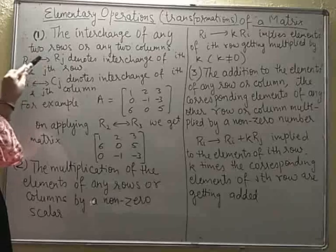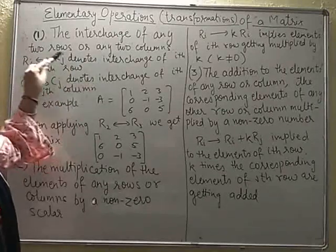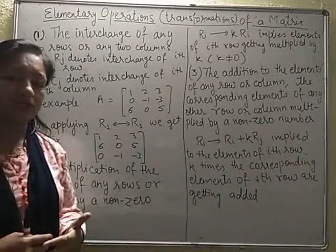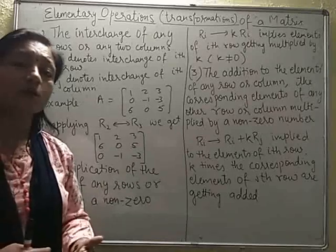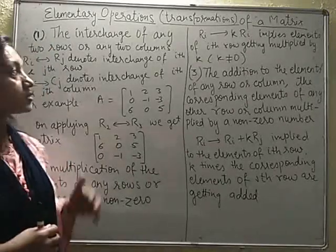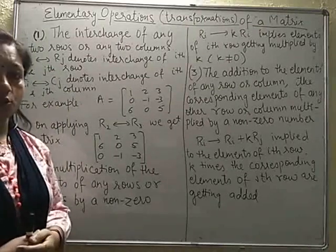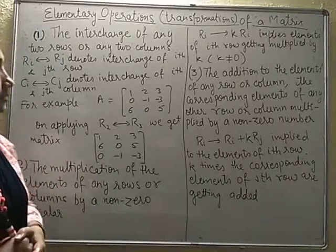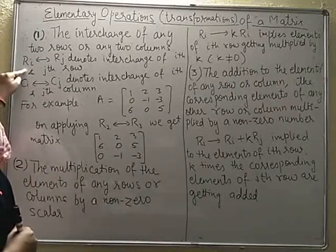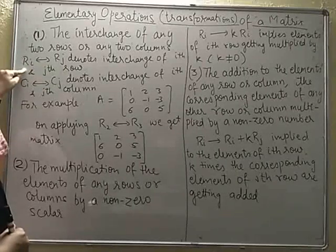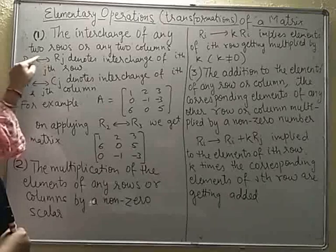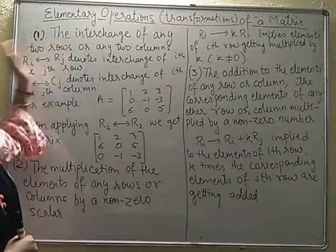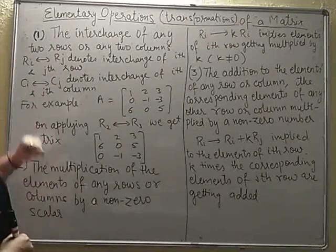The first one says: the interchange of any two rows or any two columns. You have to be careful — at a time, only one operation will take place: either a row operation or a column operation. So you can interchange two rows. If I write R with a double-headed arrow — Ri ↔ Rj — that means the Rth row and the Jth row are getting interchanged with each other.